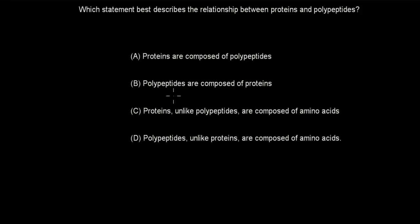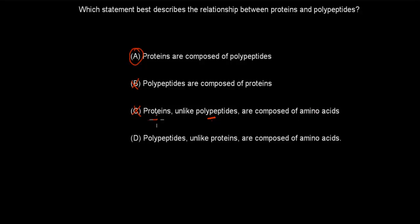Welcome back. The correct answer is A — proteins are composed of polypeptides. B is false; it's the other way around. C is false because both proteins and polypeptides are made of amino acids — it's not exclusive to proteins. D is also false for the same reason. Both polypeptides and proteins are made up of amino acids. So A is correct.